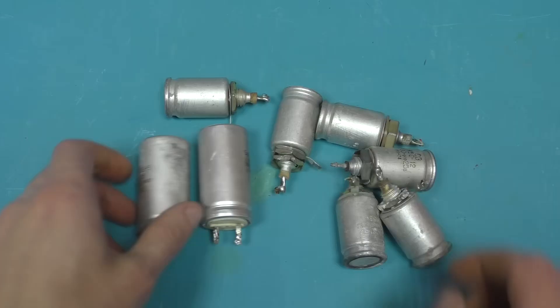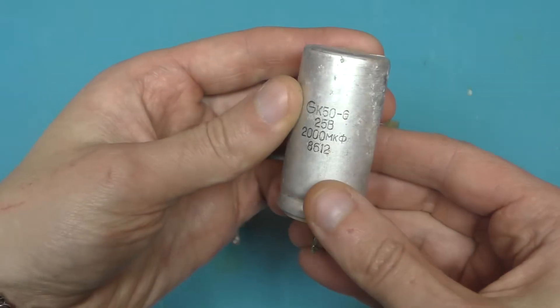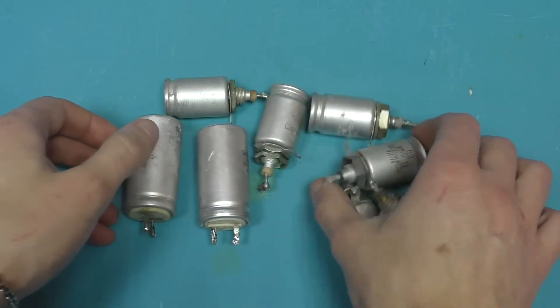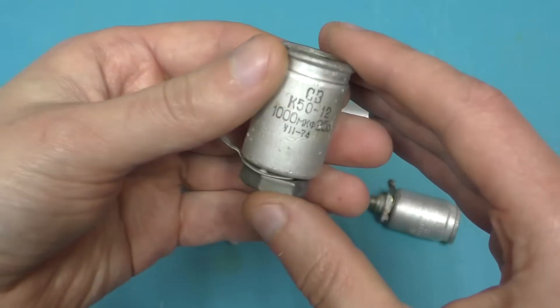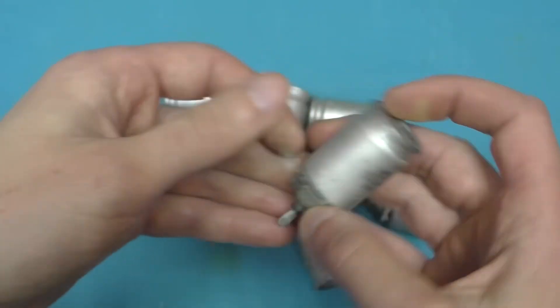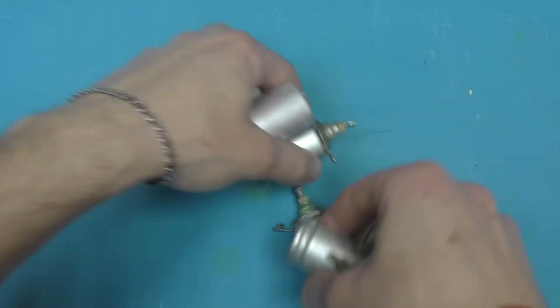Hello everyone! I had collected some Soviet capacitors and I decided to make something useful out of them. All the capacitors are rated for 25 volts, with a capacity of 1000 microfarads in the small ones and 2000 in the large ones.